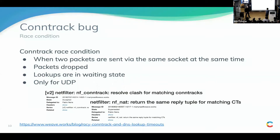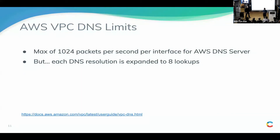There are two kernel bugs for this in the netfilter module. One of them is fixed; the status of the other is uncertain. This happens only for UDP. Additionally, the AWS VPC DNS server has a limit of 1024 packets per second. If you are doing eight lookups for every single lookup, you reduce that effective capacity significantly — something important to keep in mind.